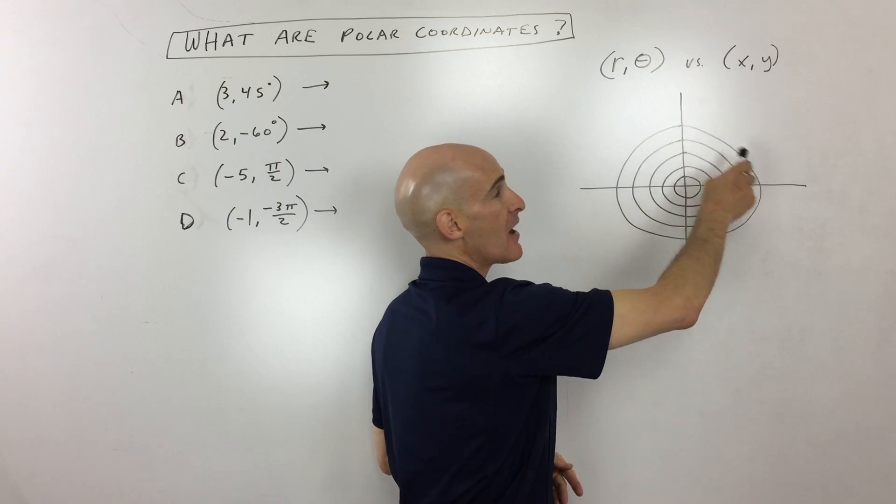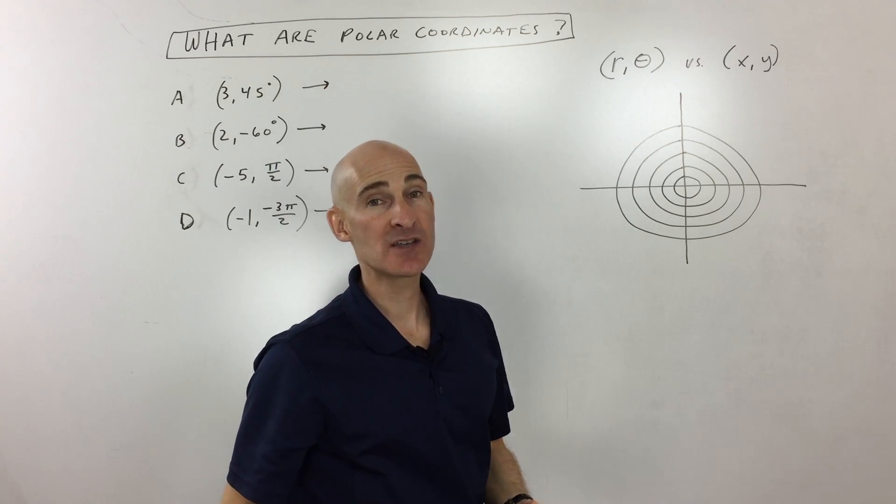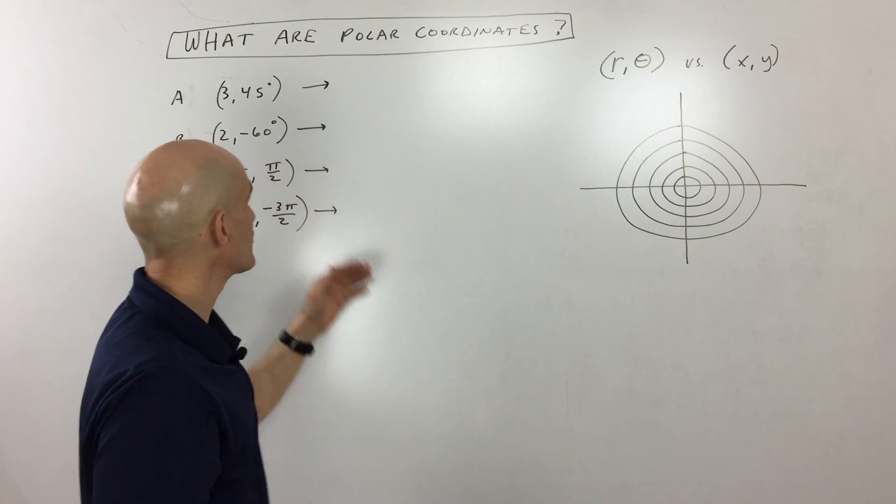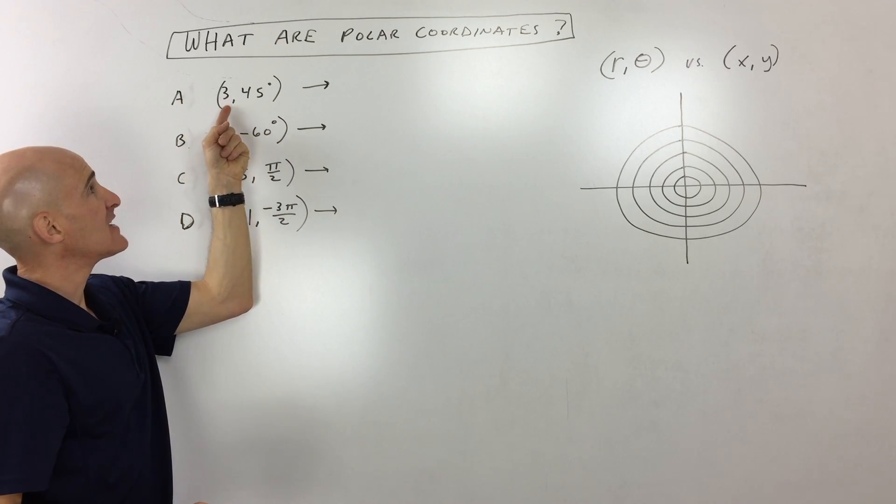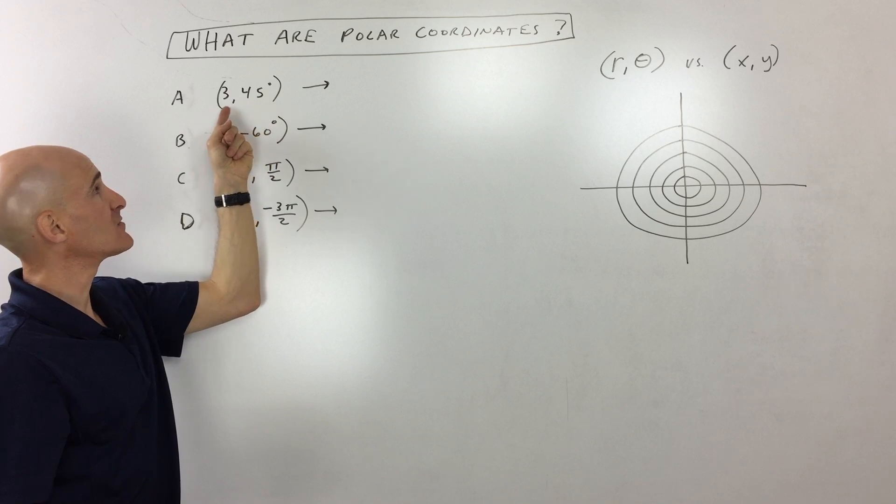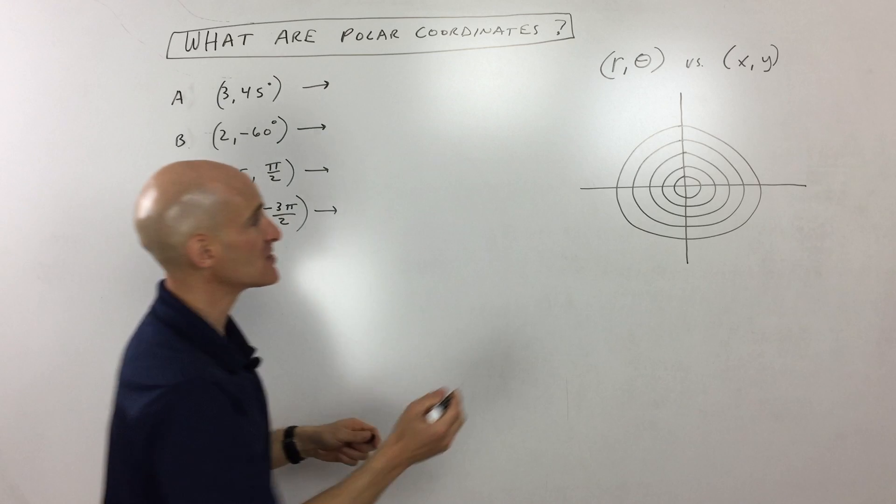Remember, positive if it's counterclockwise and negative if it's clockwise. So let's look at some examples together so you can understand how to work with these. Say we wanted to locate point A.